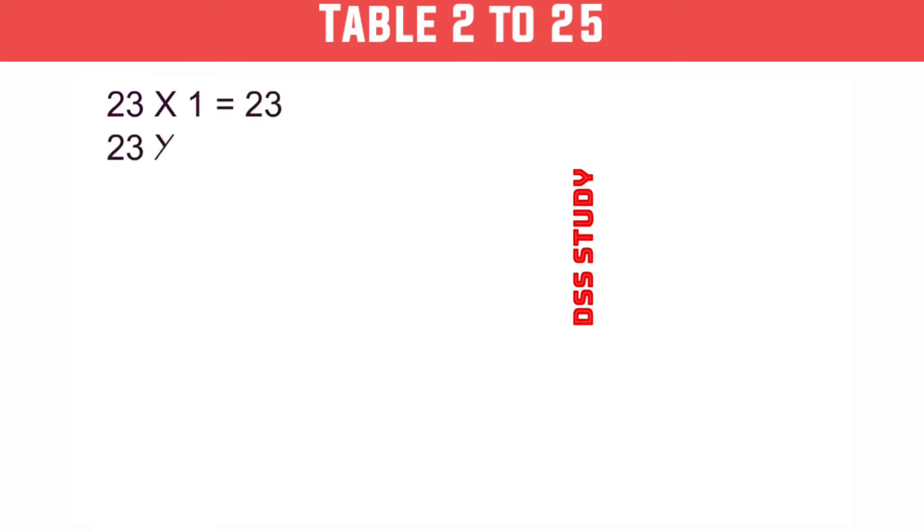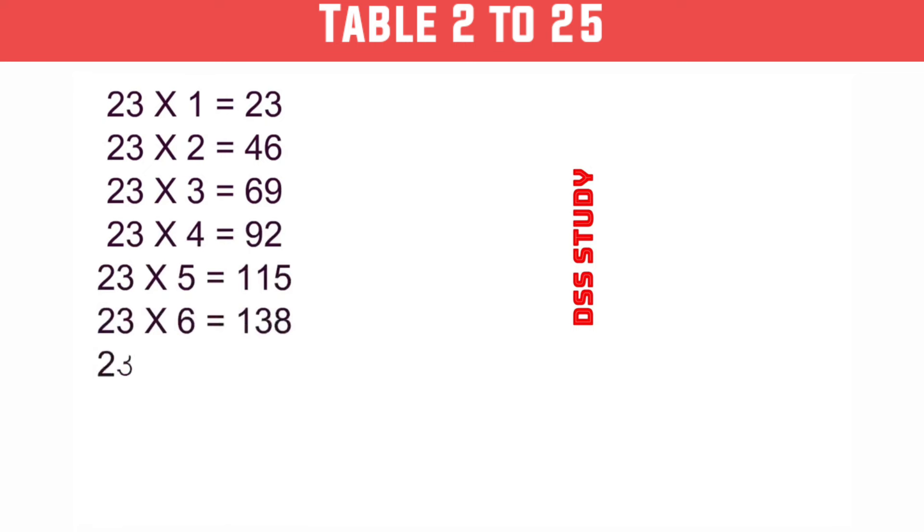23×1 is 23, 23×2 is 46, 23×3 is 69, 23×4 is 92, 23×5 is 115.